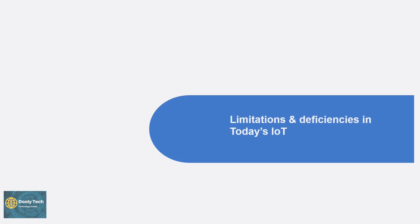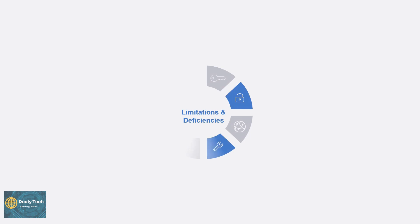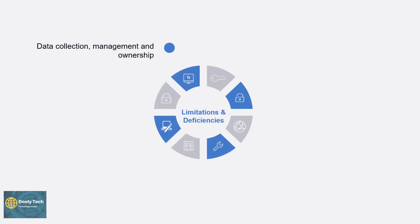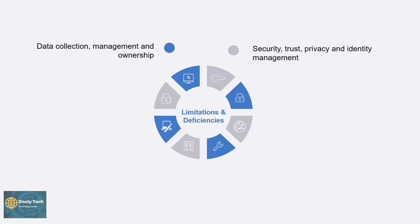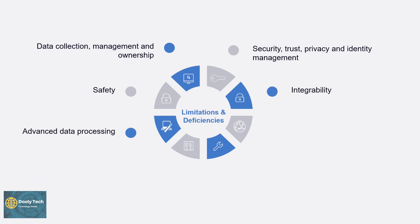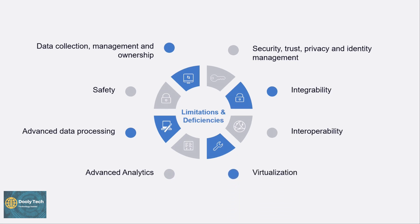Now let's look at the limitations and deficiencies in today's IoT. The first limitation is data collection, management, and ownership. The next is security, trust, privacy, and identity management. Third is safety. Fourth is integrability. Fifth is advanced data processing. Sixth is interoperability. Seventh is advanced analytics. And finally, virtualization.